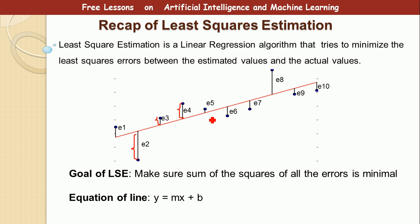So it means I have to take the square of E1, E1 squared plus E2 squared plus E3 squared plus E4 squared plus E5 squared plus E6 squared up to E10 squared. And then you get the total of everything and then make sure that this total is minimum.